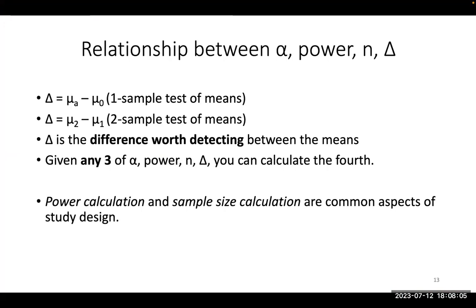Delta is always indicating the difference worth detecting between the means. If you have any three of the four parameters given, you can calculate the fourth. Power calculation and sample size calculation are core aspects of study design — not just common, but the basis of everything. You will likely study the CONSORT guidelines, which are reporting guidelines for randomized controlled trials. Power calculations and their explanation are a substantial part of every trial design and reporting.